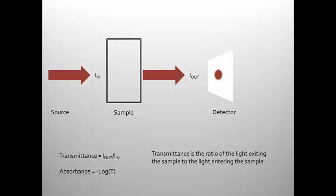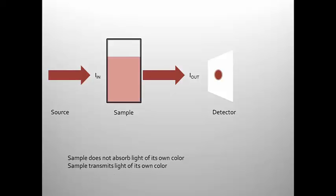We're going to call this ratio transmittance. And we're also going to define the absorbance as the negative log of this value. So there's a relationship between transmittance and absorbance. We're going to focus on absorbance because it turns out to be the more useful term.